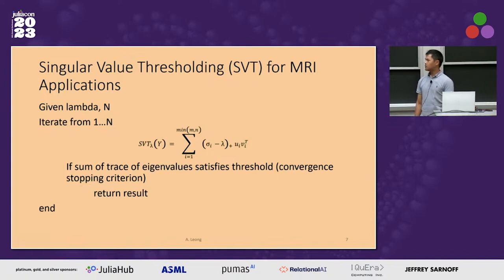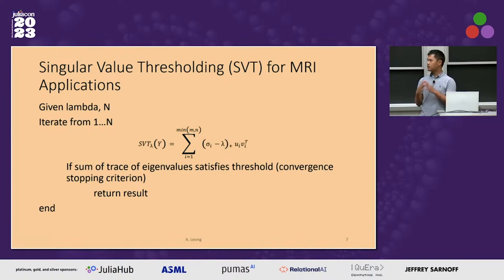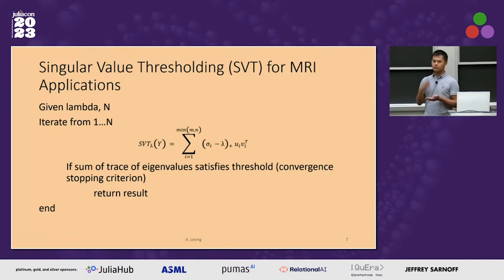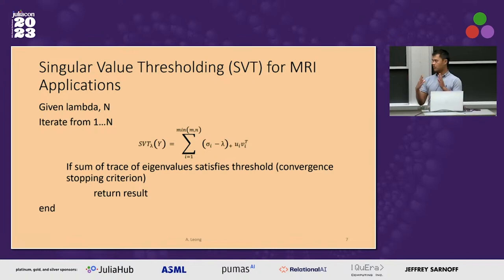One of the first algorithms we look at is singular value thresholding, based on Emanuel Candès's paper. Very similarly with the SVD, but what we do is for each of the singular values — the largest ones — we subtract a value lambda, which is arbitrary. That subscript plus just means that if we do this multiple times we'll eventually go negative, and what we do is take the maximum of that value so we stay positive. We keep iterating over this several times until our reconstruction converges.